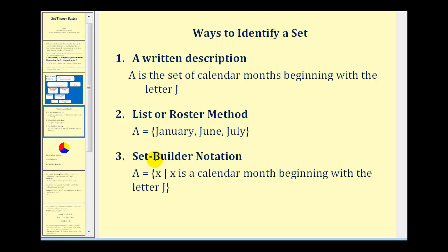And we could also use something called set builder notation. Set A is the set of all elements X such that X is a calendar month beginning with the letter J. All these represent the same set.